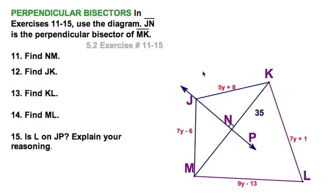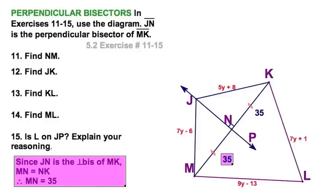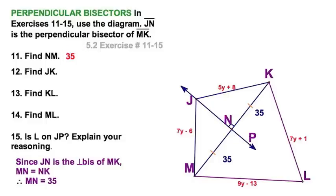Well, let's use this diagram to answer the five questions. First one, number 11. Find NM. Well, given the top sentence, JN, that's over here, is the perpendicular bisector. I see the perpendicular side. The other half of that phrase is bisector. So, right away, we've got one answer. We know that NM must be 35. Okay. Well, that was the easy one.